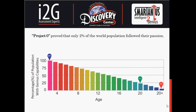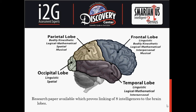In his research, Project Zero provides that only 2% of the world population followed their passion. The multiple intelligences or abilities are linked to different brain regions. Abilities such as bodily-kinesthetic, logical-mathematical, spatial, and musical are connected to the parietal lobe. Linguistic, bodily-kinesthetic, logical-mathematical, interpersonal, and musical intelligences are connected to the frontal lobe. Linguistic, logical-mathematical, and interpersonal are connected to the temporal lobe, while linguistic and spatial are connected to the occipital lobe.